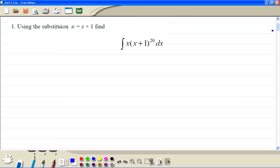Question 1. So we have u is equal to x plus 1. And we differentiate with respect to x. So du dx is 1. So we always make dx the subject. So dx just equals du.